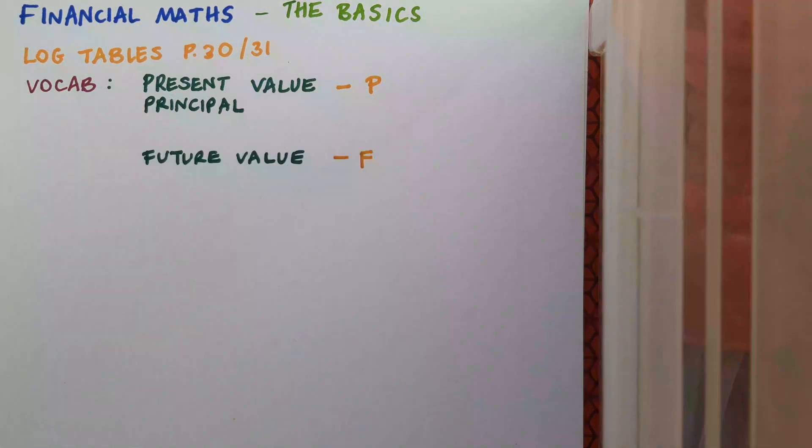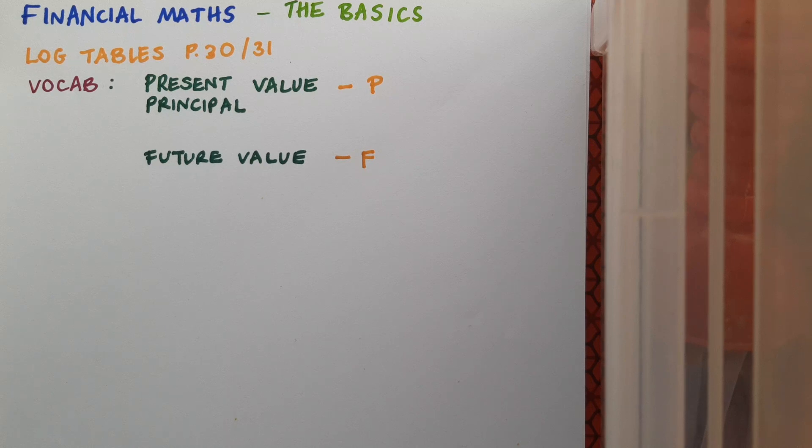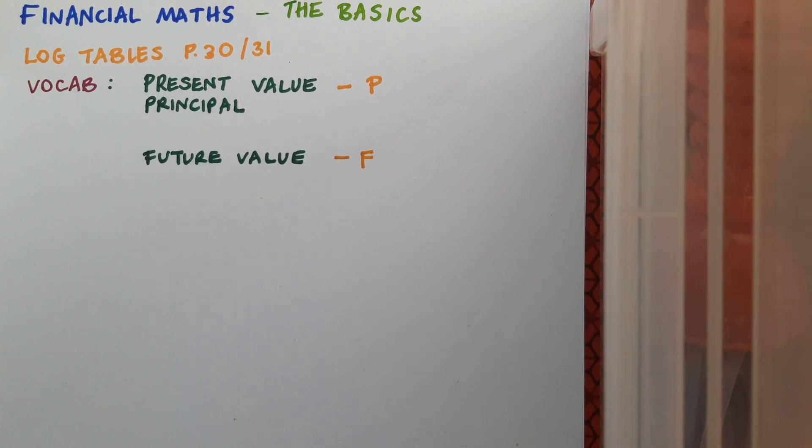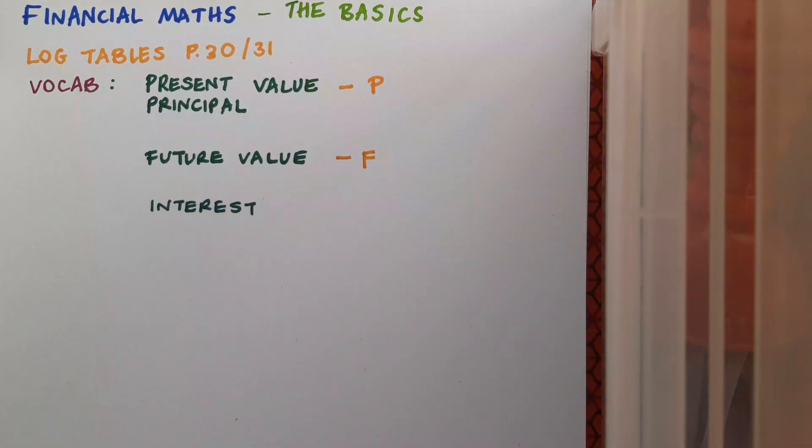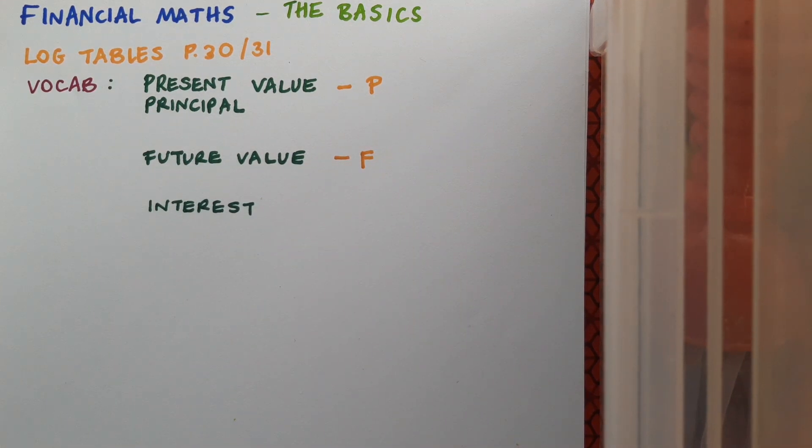Next we have future value. This is represented by F. Future value is the value of an investment or loan after interest has been applied.